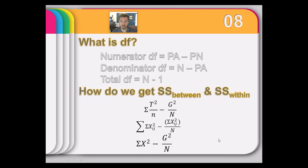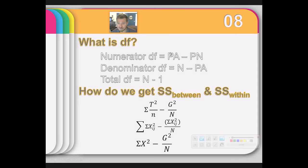The degrees of freedom can be understood in terms of hypothesis statements. The number of parameters in the alternate model is always K — because every group is different under H-A. Under the null, every group is the same, so you only have one parameter. That's what gives us K minus 1 for the numerator. The denominator DF comes from the total sample size N minus K, the number of parameters estimated under the alternate.